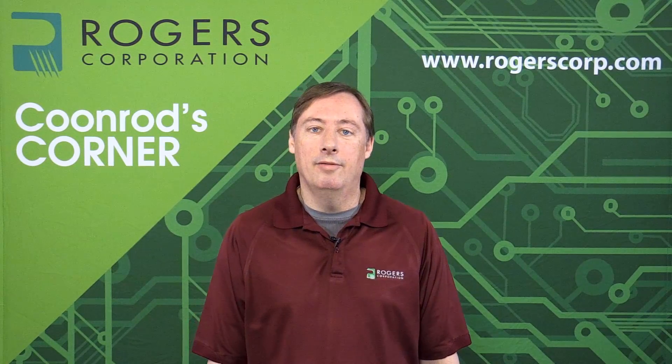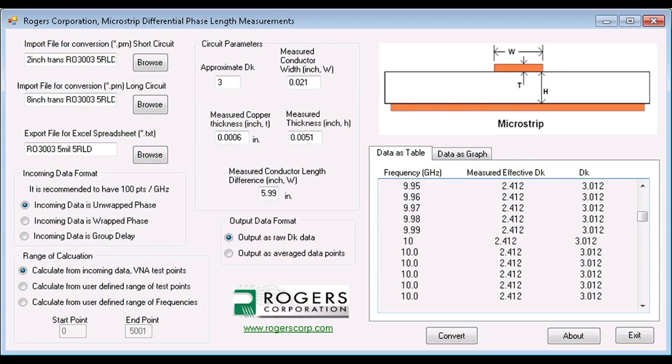This picture is a screenshot of the software showing the output of the measurements of these circuits. You can see the table of information on the right is frequency versus effective dielectric constant and also frequency versus dielectric constant. That is from the measurements taken on the long and short circuit for the network analyzer that's read into the software, and it's also based on the circuit dimensions that the user has inputted.